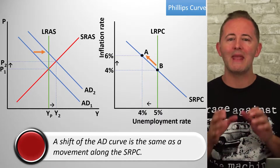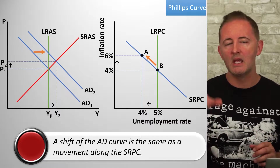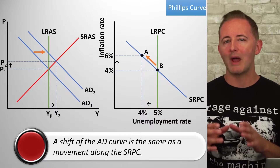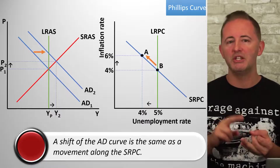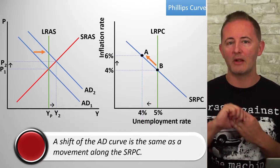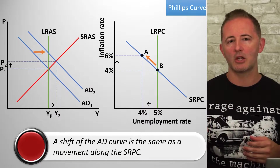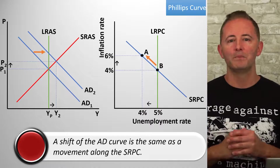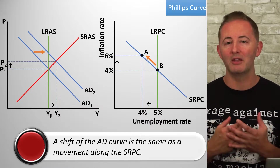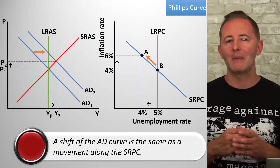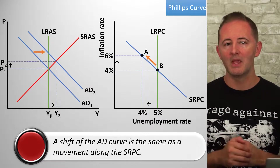Please be aware that it's not the AD curve shifting that causes SRPC movements. Rather, it's the changes in C, I, G, or net exports that are causing both the AD shift and the SRPC movement. This also means that when policymakers use fiscal and monetary policy, it will cause movements along the SRPC.